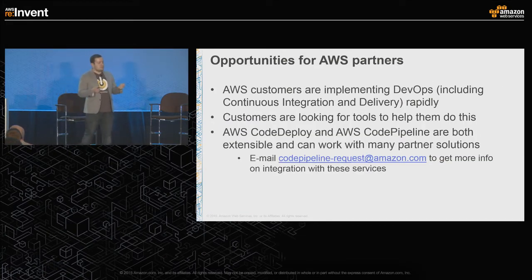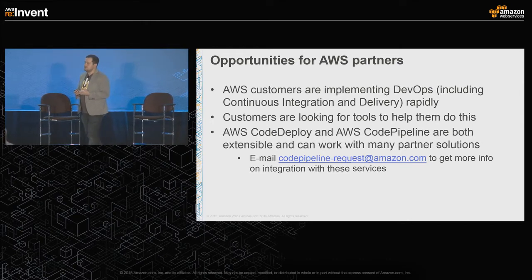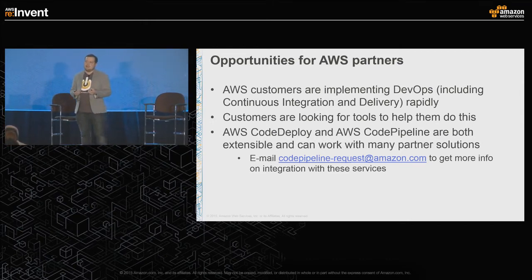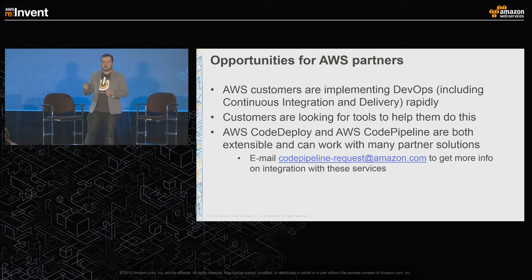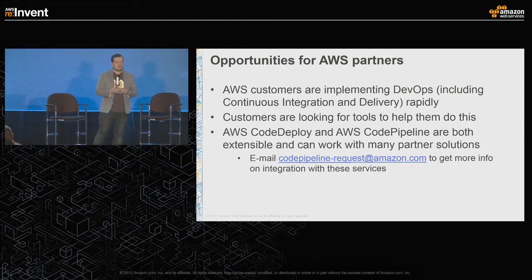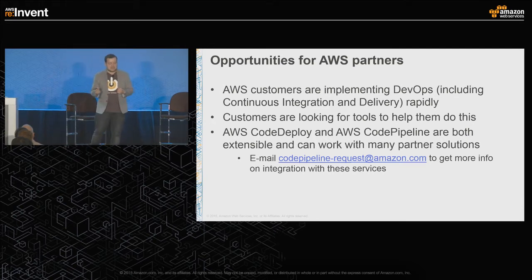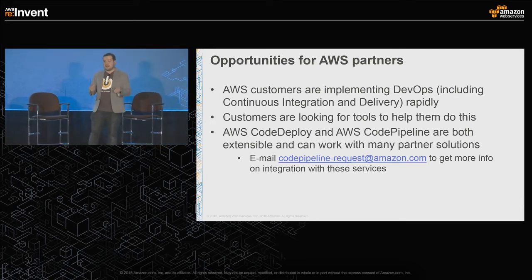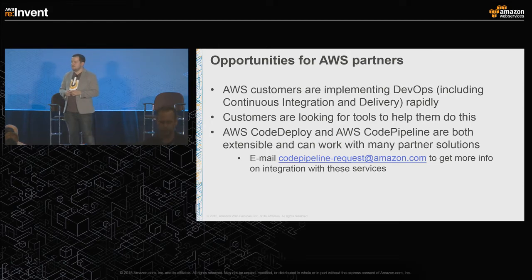There are a lot of opportunities for partners to integrate with our services. Our customers are implementing DevOps rapidly, including tools for continuous integration and continuous delivery. I meet with customers all the time asking for help implementing CI/CD or getting their organization to do DevOps. AWS CodeDeploy and CodePipeline are both very extensible and integrate with many third-party tools. If you're interested in integrating your tool, email code-request@amazon.com to start the conversation.